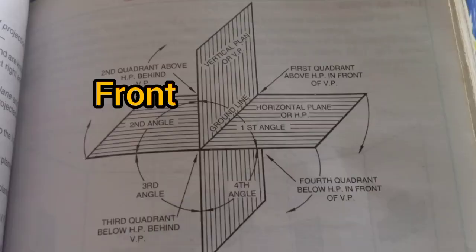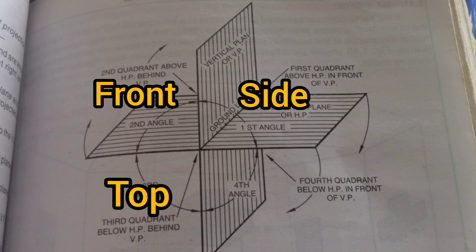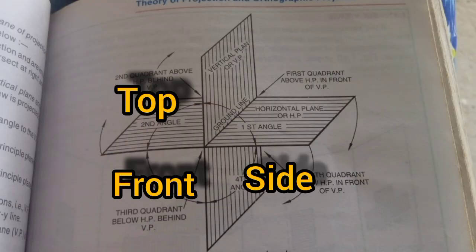Another common issue is projection type. In orthographic projection, you basically have — mostly here in Nigeria — first angle and third angle. What is the difference? In first angle, the placement format is: front, side, and top. Third angle is the opposite, the reverse of first angle. In third angle, the placement goes: top, front, and side. This is how you place the different views in first angle versus third angle.